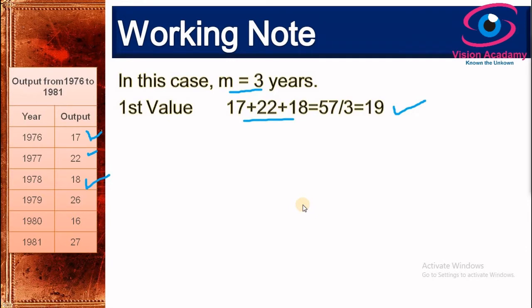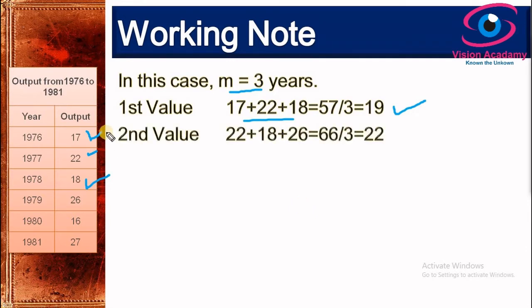For the second value, we discard the oldest value, which is 17, and consider 22, 18, and 26 instead. These sum to 66. Since we are using a three years moving average, we divide 66 by 3, giving us a second value of 22.